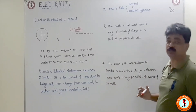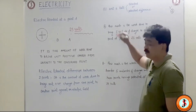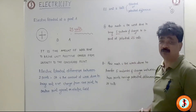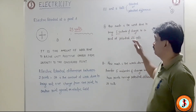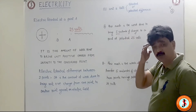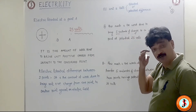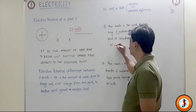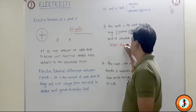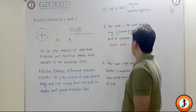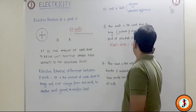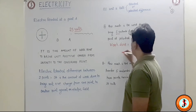So the potential is 25 volts. To bring five Coulombs of charge — if I bring one Coulomb I do 25 joules, so if I bring five Coulombs I do 25 into 5 joules. The electrical work done is equal to 5 into 25, that is 125 joules.